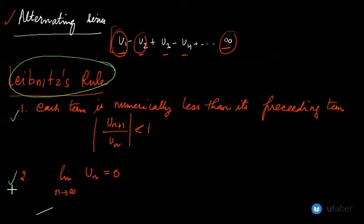Let's take an example. Let us look at a series given as 1 - 1/√2 + 1/√3 - 1/√4 and so on. Now this is clearly an alternating series. If you apply the limit rule, let us look at the first condition.